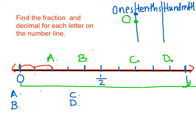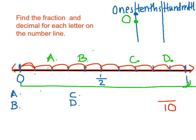So let's count our jumps: 1, 2, 3, 4, 5, 6, 7, 8, 9, 10. It took me 10 jumps to get from 0 to 1. That means my number line is counting by tenths. Now what's cool about this is you can just count the number of jumps, and that's going to tell you what goes on top. So by the time I get to A, I have jumped two times, so my fraction would be 2 tenths.